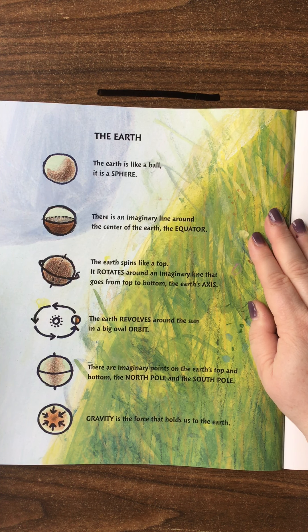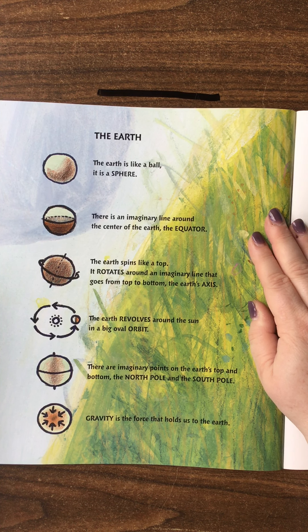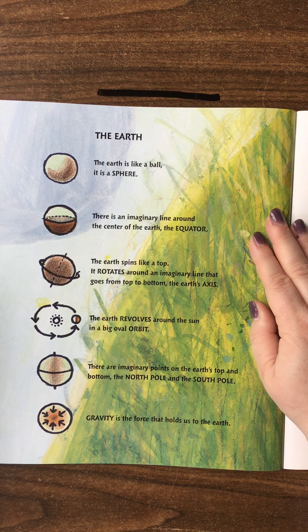The Earth revolves around the sun in a big oval orbit. There are imaginary points on Earth's top and bottom, the north and south pole. Gravity is the force that holds us to the Earth.